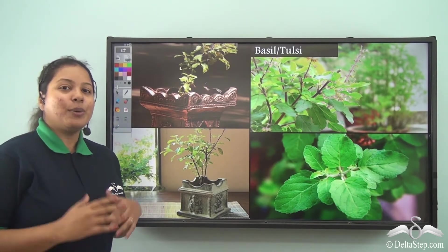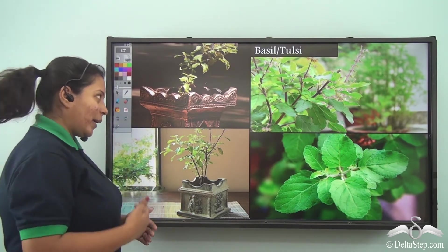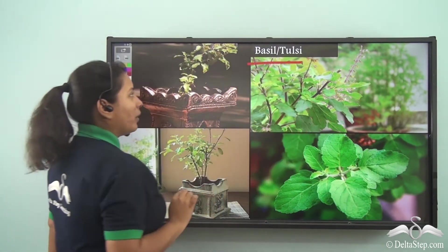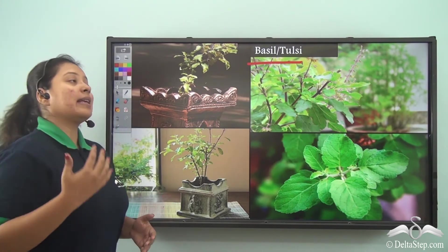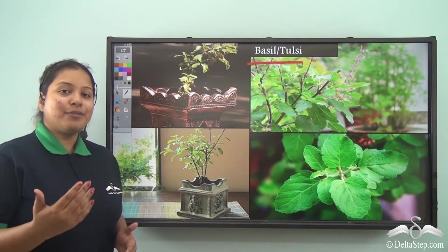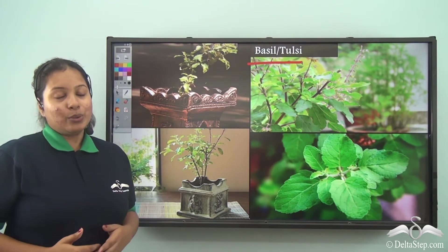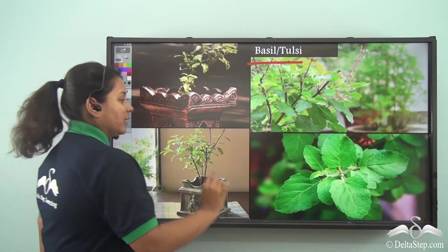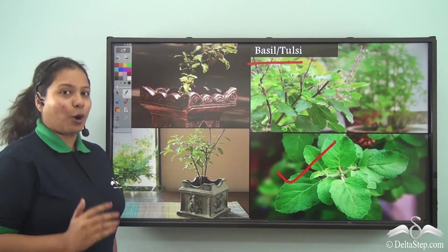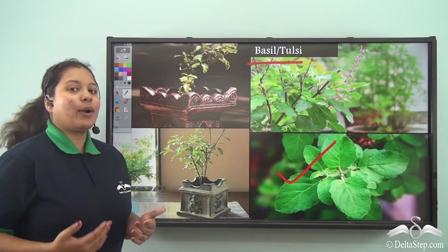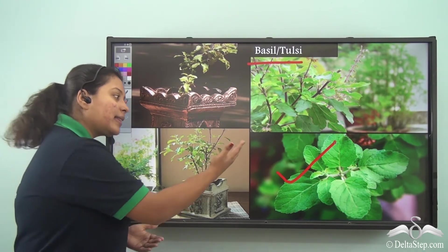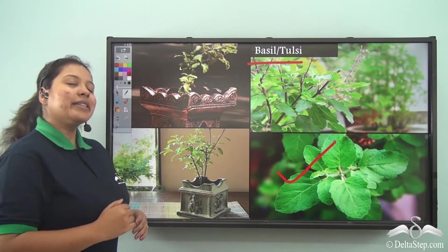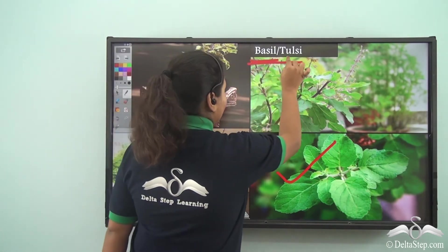Now let me take you to our homes — the common Indian homes. Over there you will find this plant friend. His name is Basil or Tulsi. Well just like its name, it is considered to be very very pure, so it is also used while worshipping God. Not only that, you will be surprised to know that these leaves have medicinal properties. So when you are sick — like you are having cough, cold or sore throat — they will help you to feel better and they will cure you. So this is our third plant friend known as Basil or Tulsi.